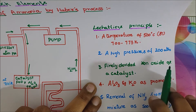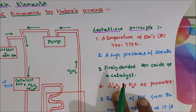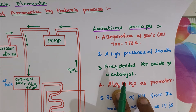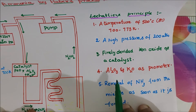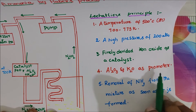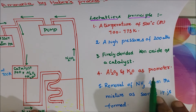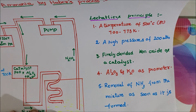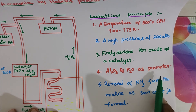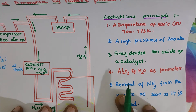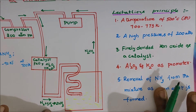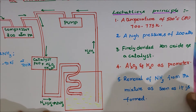Finely divided iron oxide is used as a catalyst. Being in powder form, it creates more surface area for the reacting particles to attach. Promoters — alumina and potassium oxide — are also used. These are chemical substances which enhance the activity of the catalyst and accelerate the reaction. Another important condition is the removal of ammonia from the mixture as soon as it is formed.